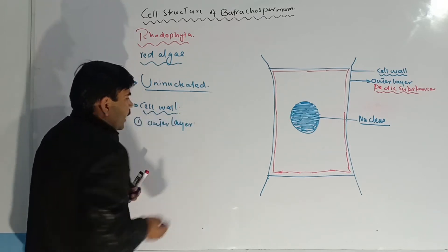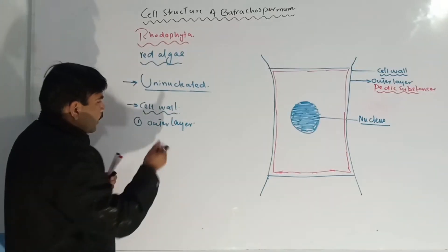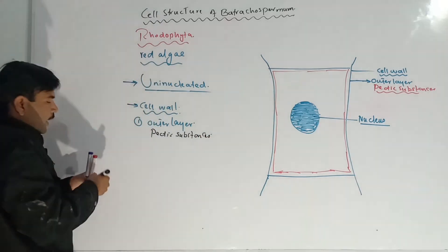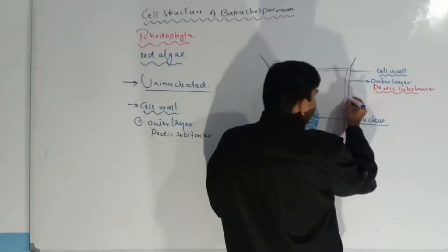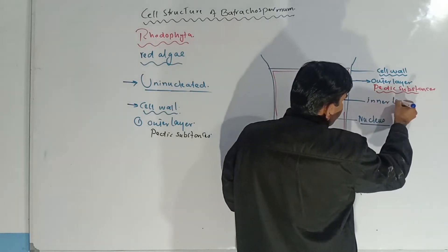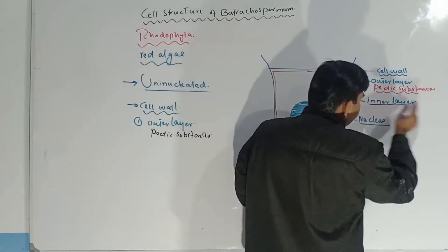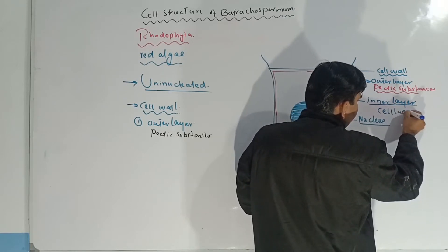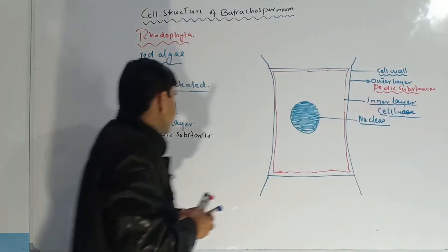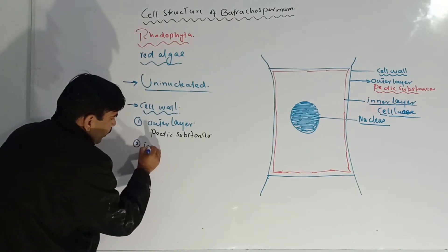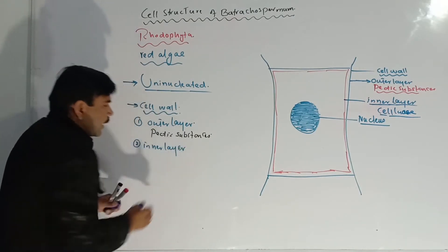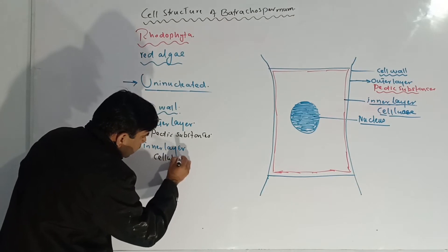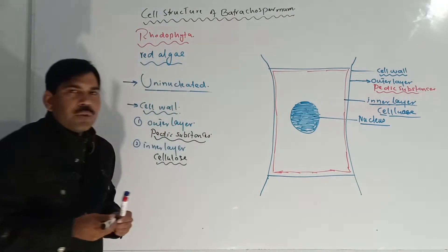The outer layer is composed of pectic substances. The inner layer is composed of cellulose. So the cell wall has two layers: the outer layer made of pectic substances and the inner layer made of cellulose.